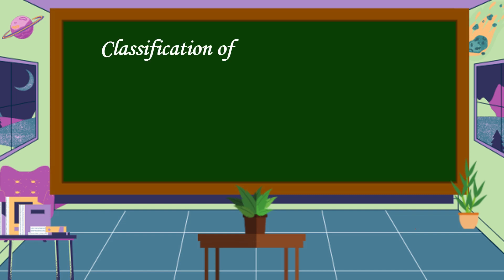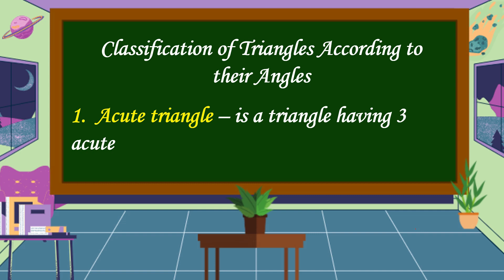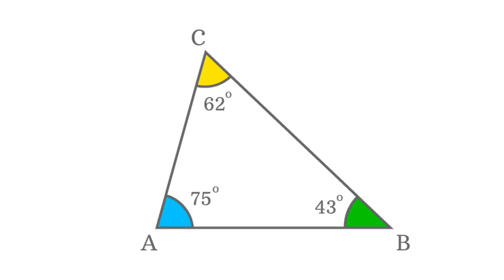Next, we're going to discuss the classification of triangles according to their angles. The first classification is an acute triangle. An acute triangle is a triangle having three acute angles. This is an example of an acute triangle — all the angles are less than 90 degrees.